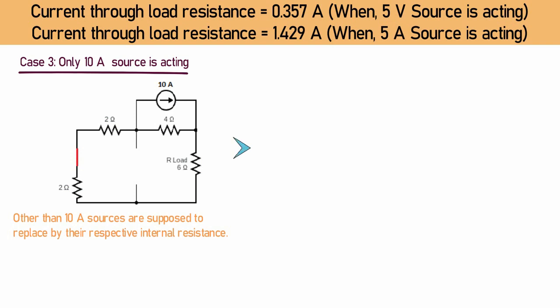For easy calculation, the circuit can be represented in this way too. So again, two parallel paths is connected with 10A current source.